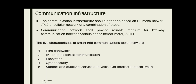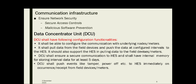Voice over internet protocol means you can make internet calls — that facility is also available. The communication infrastructure should ensure network security, which is very important. Secure access controls and malicious software prevention should be in place. The network architecture of the head-end system must be secured with the support of firewalls and encryption. The system shall also allow host-based firewalls to be configured in order to ensure security.